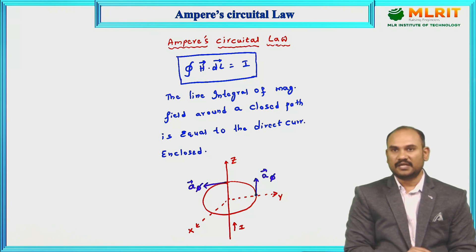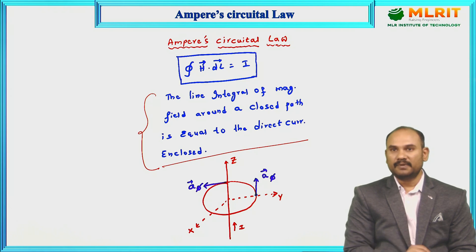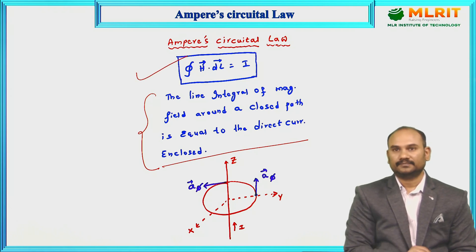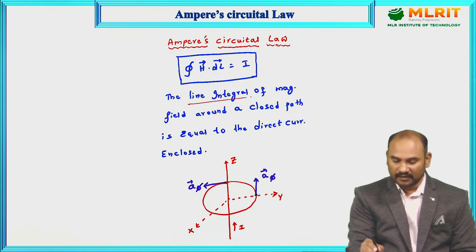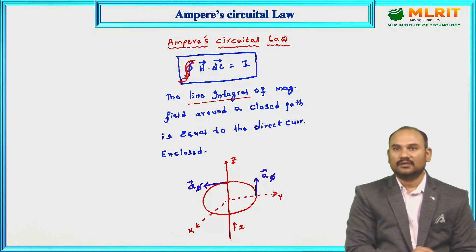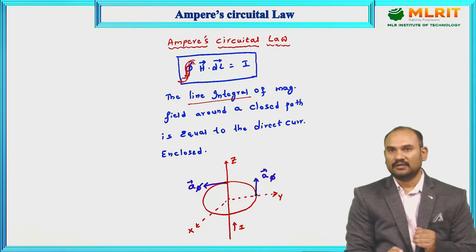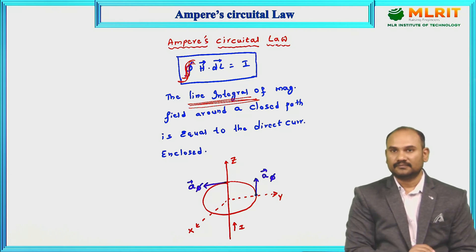The statement is in theoretical form. If you express it in mathematical form, you get the integral expression. Let us decode this expression. The statement says 'line integral.' This is a single integral — line integral means single integral, surface integral means double integral, volume integral means triple integral. Here you have dL, which represents it is a line integral — a single integral.